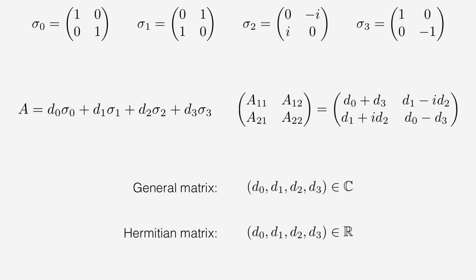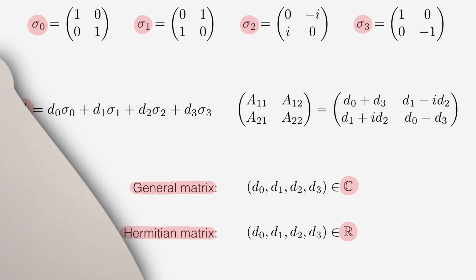So time to summarize. We've shown that the identity matrix together with the three Pauli matrices form a basis for the space of 2x2 complex matrices. Any 2x2 matrix A can be written as an expansion in terms of the identity matrix and the three Pauli matrices. For a general complex matrix A, the expansion coefficients are complex numbers, and for a Hermitian matrix A, the expansion coefficients all become real numbers. You can find links in the description discussing the eigenvalues and eigenvectors of a general 2x2 matrix, and several applications of two-state quantum systems. I hope you liked the video — don't forget to subscribe!